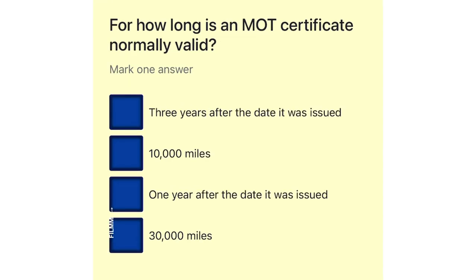For how long is an MOT certificate normally valid? 3 years after the date it was issued. 10,000 miles. 1 year after the date it was issued. 30,000 miles.